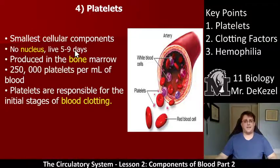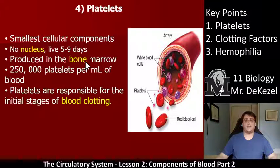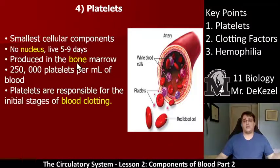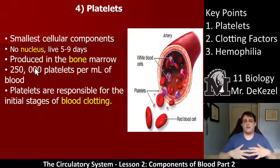Platelets get filtered out by your kidneys, liver, and spleen. They are produced in the bone marrow, just like erythrocytes (red blood cells) and leukocytes (white blood cells). There are about 250,000 platelets per milliliter of blood. They are very very small and there are a lot of them, because they may need to clot a large portion of a bleed.